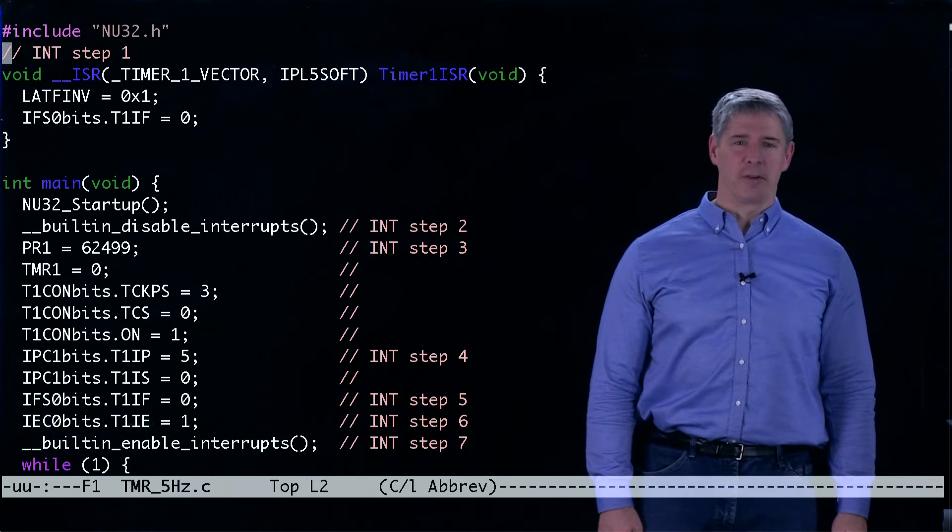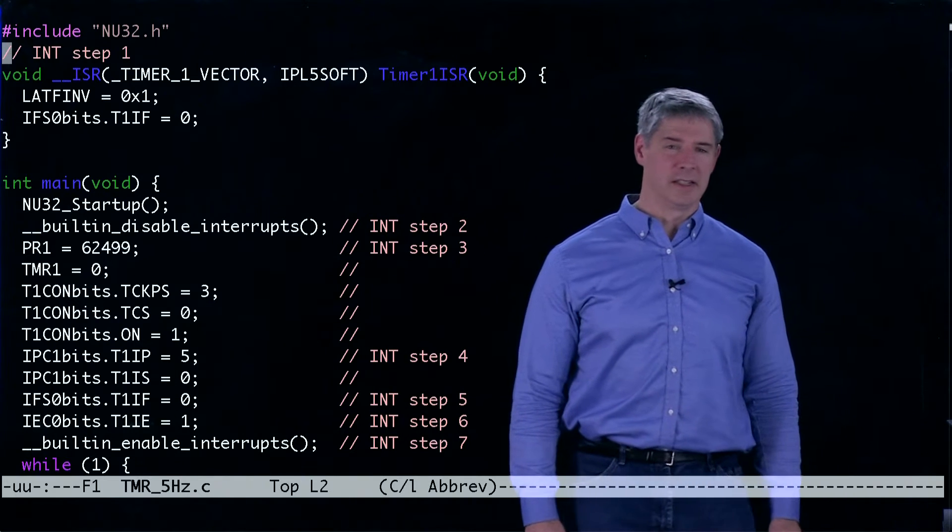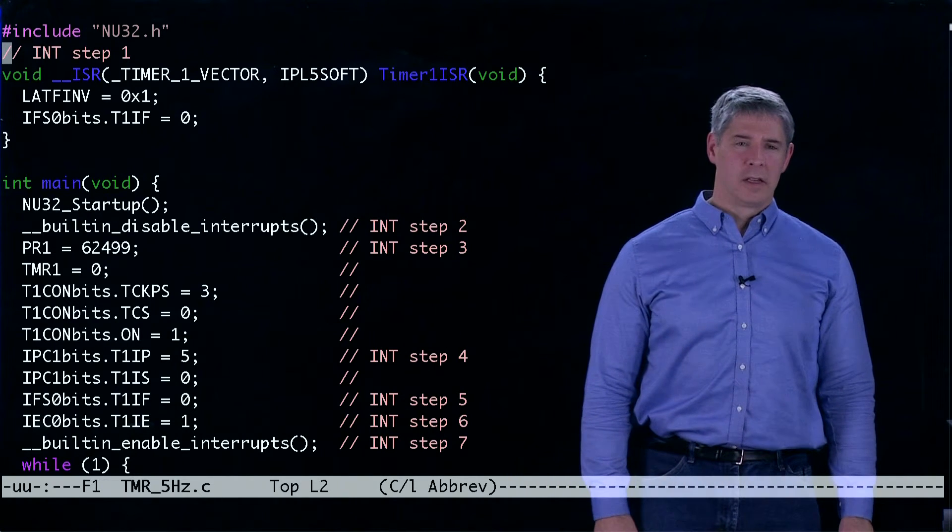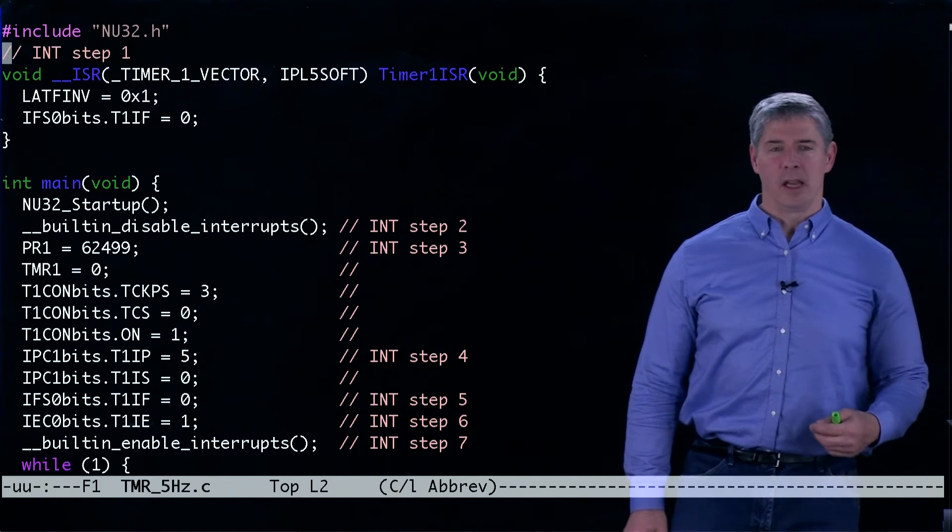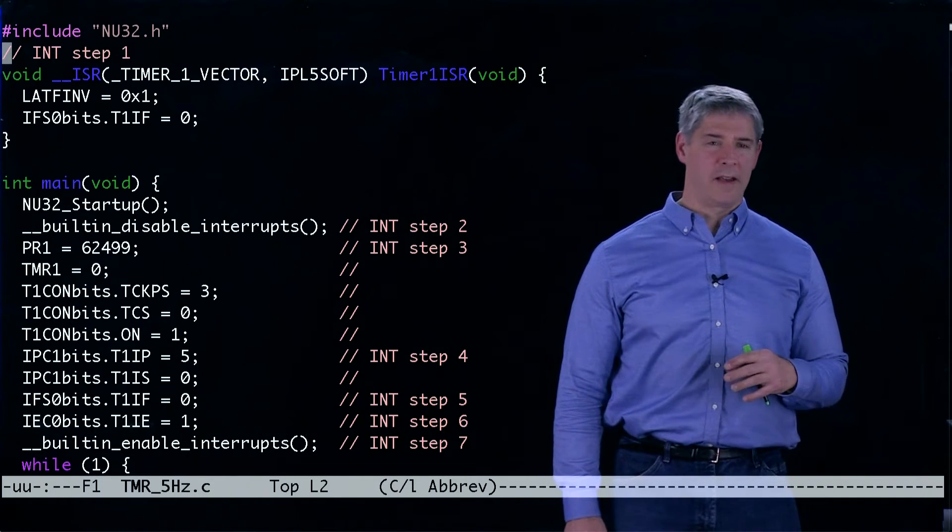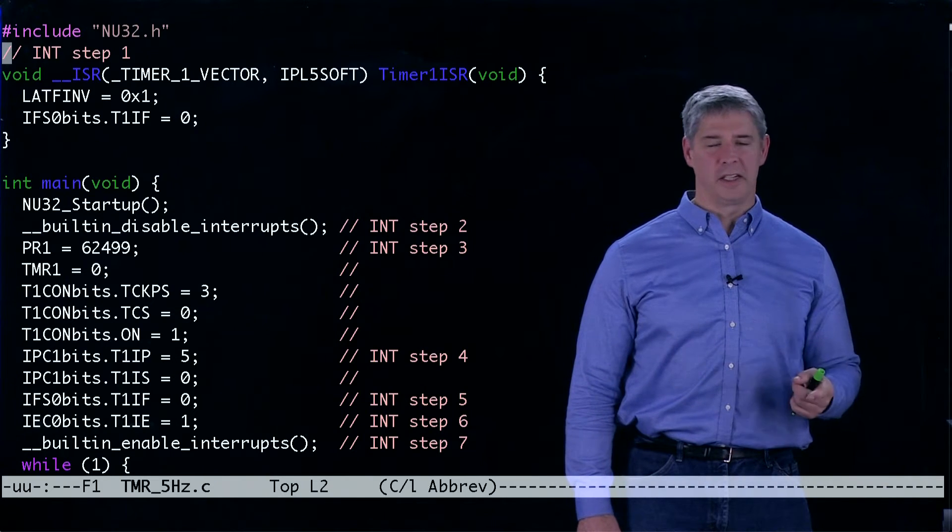The program timer5hertz.c uses timer1 to toggle one of the LEDs at 5 hertz. Since the CPU is running at 80 megahertz, that means every 16 million CPU cycles the LED should toggle.